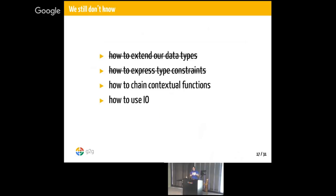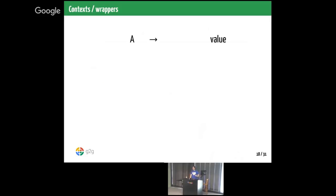Thanks to type classes, we have solved two of the problems: we know how to extend our types by making them instances of the type classes we need, and we know how to express type constraints by listing the type classes that provide what we require. Let's move on to chaining contextual functions. The cascading maybe example could be solved just for maybe, but that problem of having a type that wraps another value and leads to cascading issues happens with several types — not just maybe. Thankfully, there's a generic solution in the language.